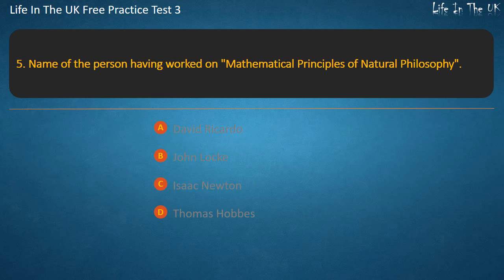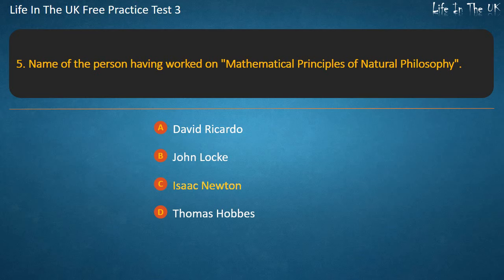Question 5. Name of the person having worked on mathematical principles of natural philosophy — David Ricardo, John Locke, Isaac Newton, or Thomas Hobbes? Answer: Isaac Newton.